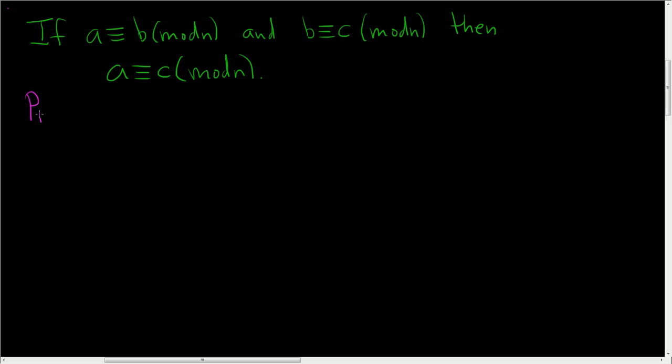Let's prove this, so proof. Suppose A is congruent to B modulo N and B is congruent to C modulo N.